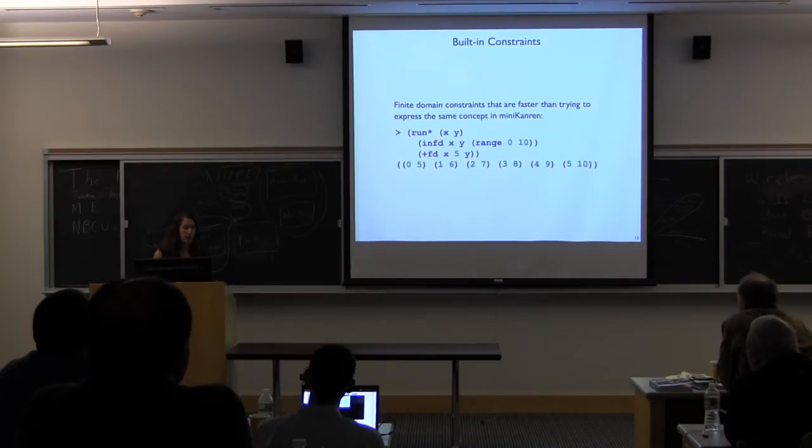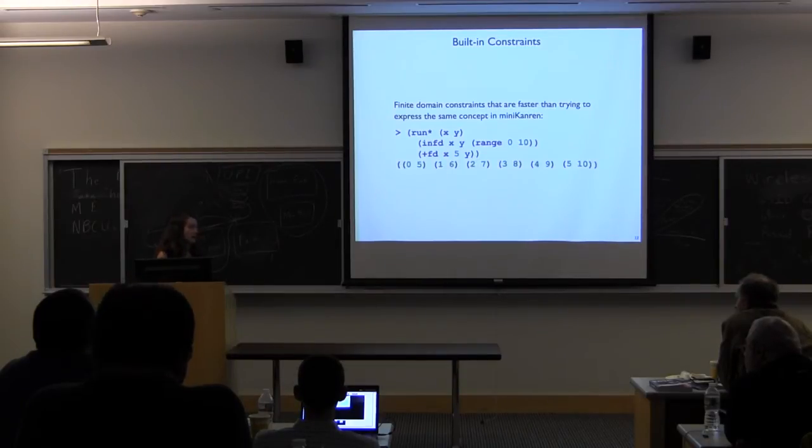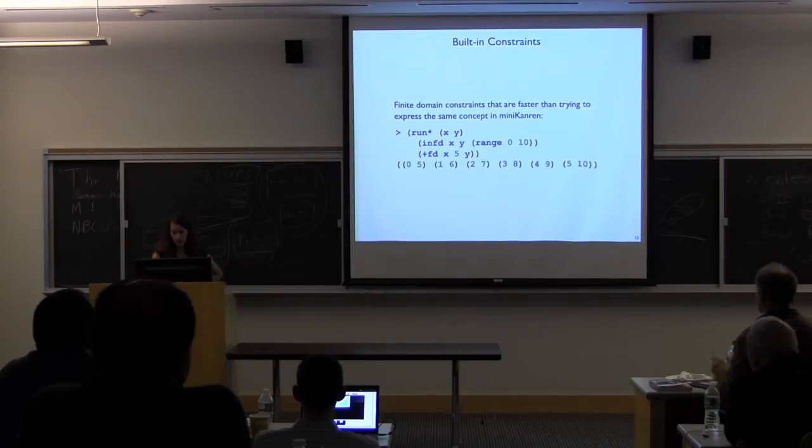So in C-Cannon, you have things like finite domain constraints, where you can say that x and y are in the range of 0 to 10, and that x plus 5 is y. And so C-Cannon gives you out, well, all those things that are 5 apart in 0 through 10.